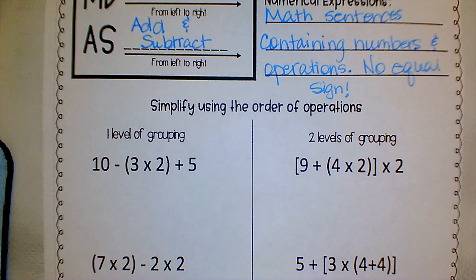They're giving us two sets of examples, one with one level of grouping and one with two levels of grouping. So in one level of grouping we see the parentheses, in two levels of grouping we see brackets. All right, so we have ten minus parentheses, three times two in parentheses, plus five.